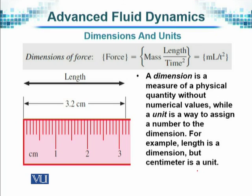The dimensions of a force, for example — in fluids in motion, we talk about force every now and then. A short while ago we were talking about momentum, which relates to force. Force uses mass times length over time squared. So if I try to write it down in terms of its dimensions, we write M for dimension of mass, L for dimension of length, and T for dimension of time. Since time is in the denominator, we show it as a division. So dimension is a measure of a physical quantity without the numerical value attached to it.